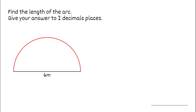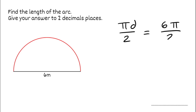For our next question we've got to find the arc length again. We've got another semicircle, but we're going to give our answer to two decimal places this time. We know we're going to use the formula pi times d, which gives us the whole circumference. Because it's a semicircle, I only want half, so I'm going to divide by 2. The diameter is 6, so I could write that as 6 pi divided by 2, which simplifies to 3 pi.